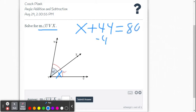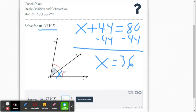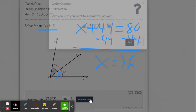We subtract 44 from both sides and get x equals 36 degrees. Let's go ahead and type that into DeltaMath and confirm that we are correct. Submit.